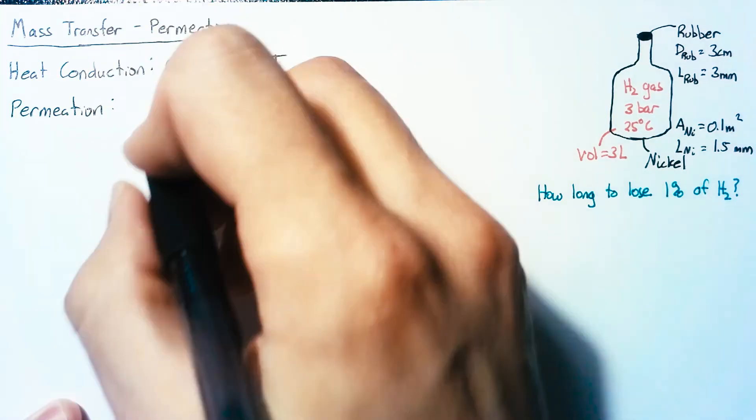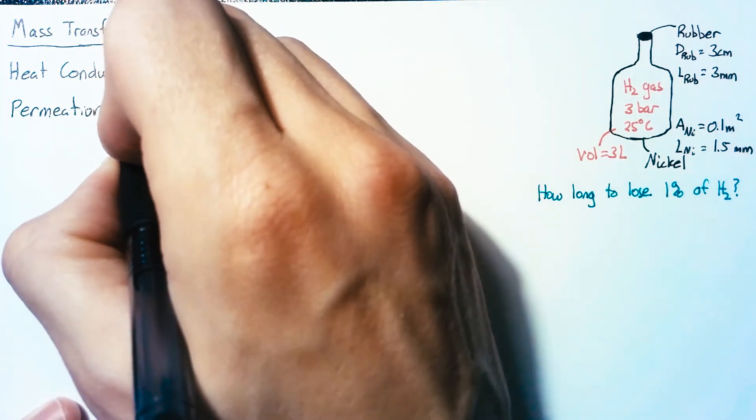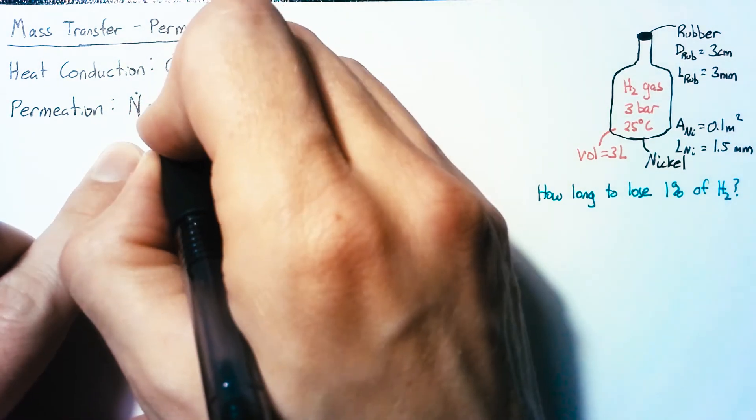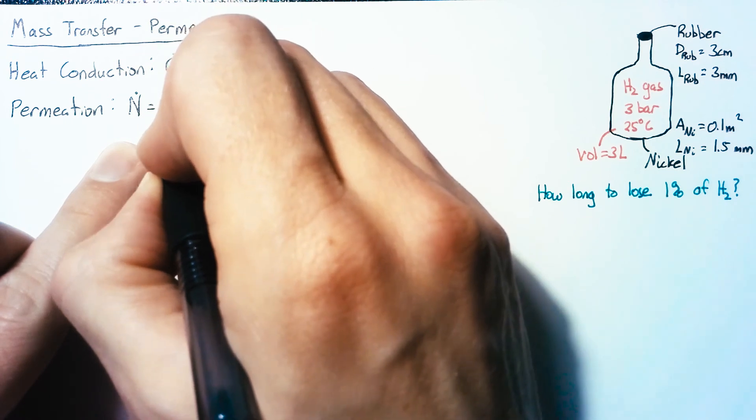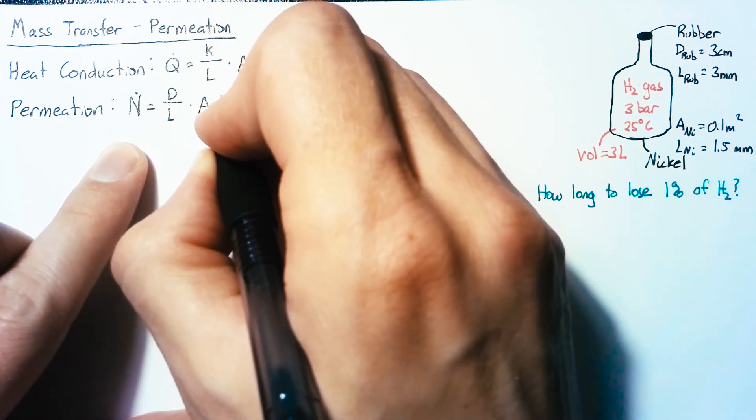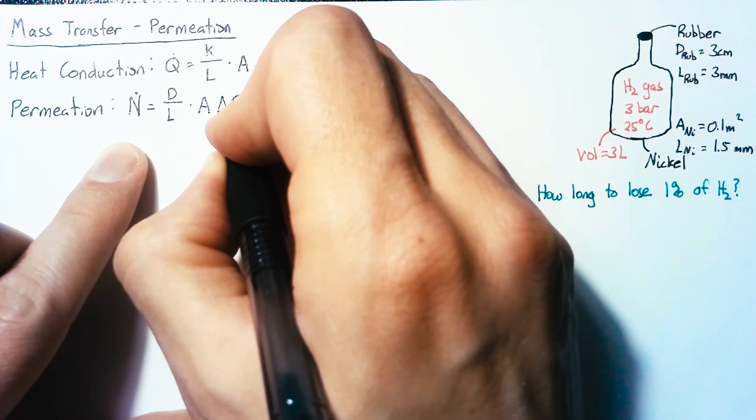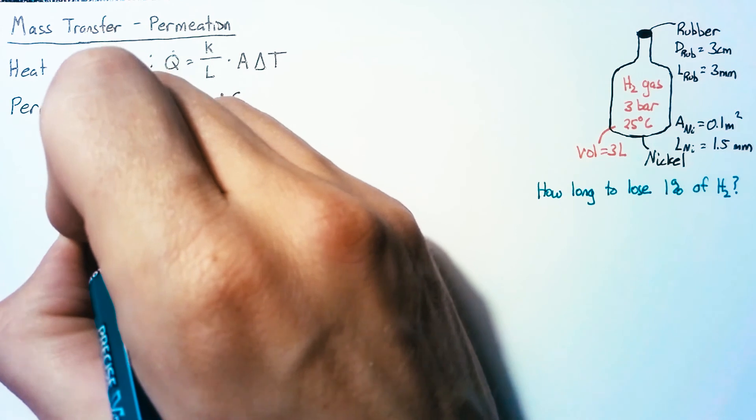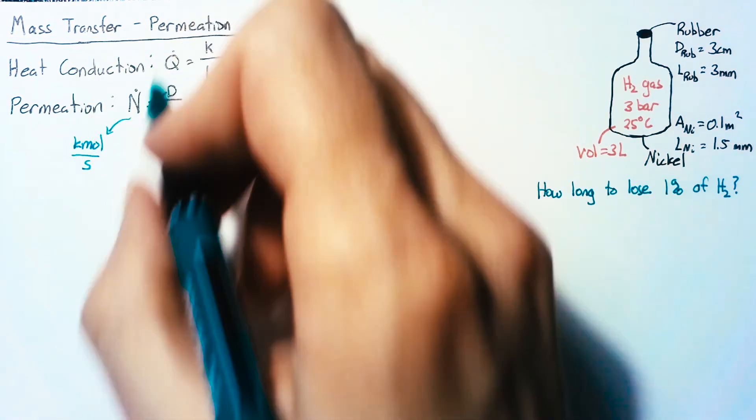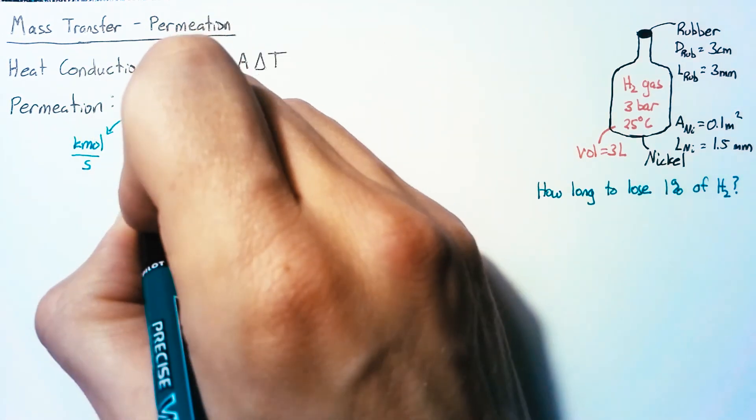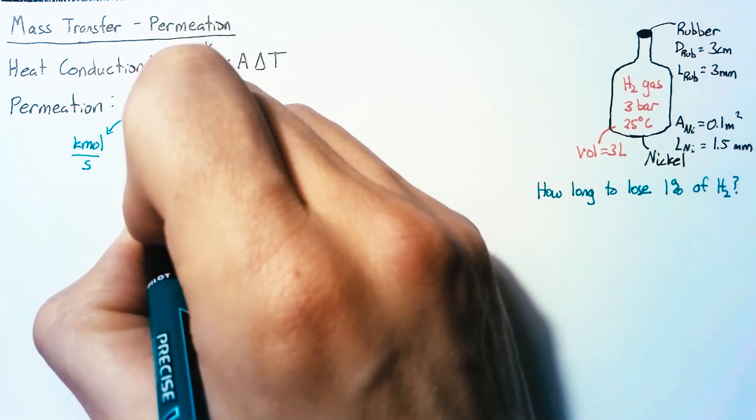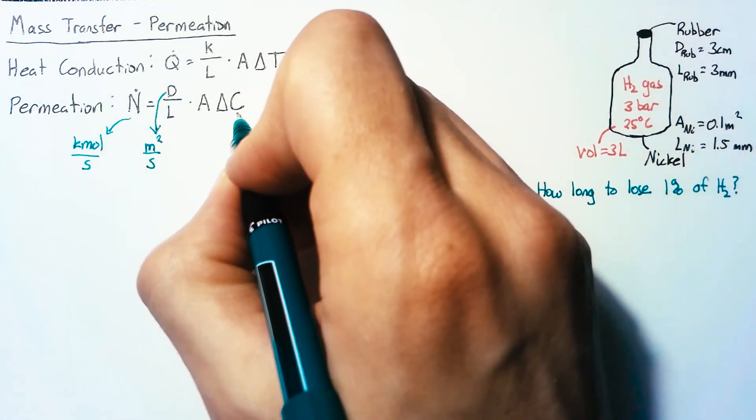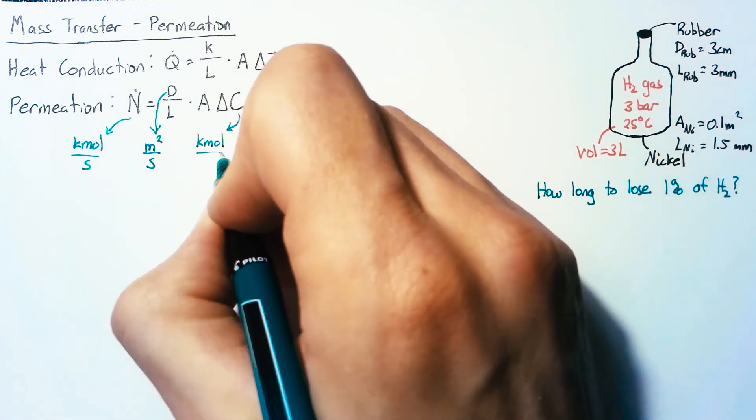We can use this exact same form to explain what's happening with our hydrogen. For permeation we see a flow not of heat but of molecules. Our molar flow rate ṅ equals a diffusion constant D divided by thickness, multiplied by area, and multiplied by a change in concentration ΔC. This ṅ is measured in kilomoles per second, D is meters squared per second, and molar concentration is in kilomoles per meter cubed.